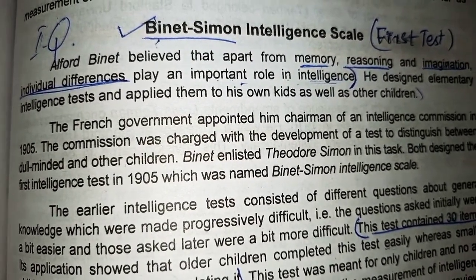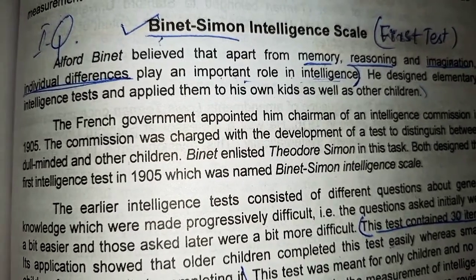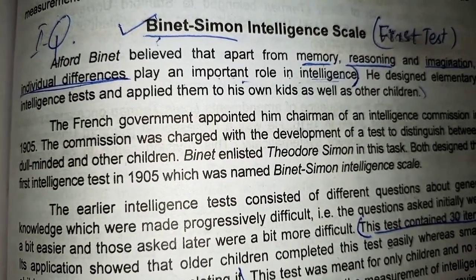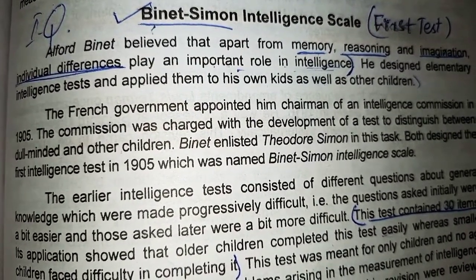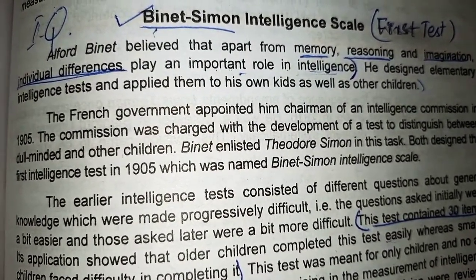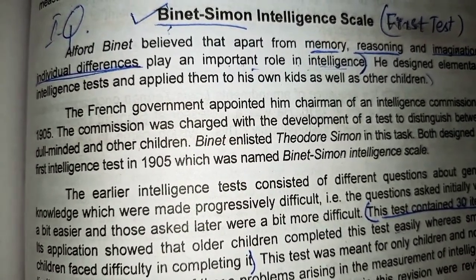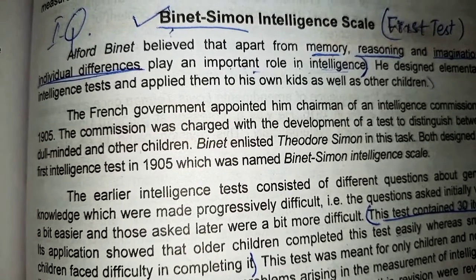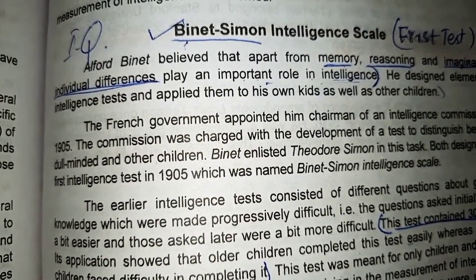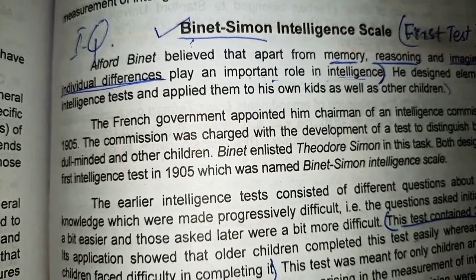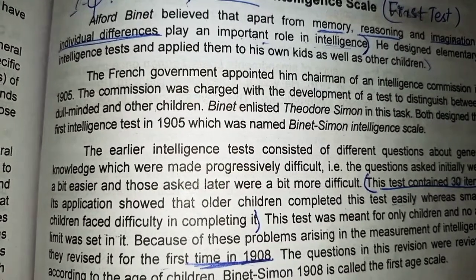Basically, the test would be used to separate and classify children as normal or special needs. So in 1905, Binet and another French psychologist, Simon, developed a way to measure school children's ability to judge, reason, and comprehend. The 1905 Binet-Simon test was made up of 30 items and was presented to students.